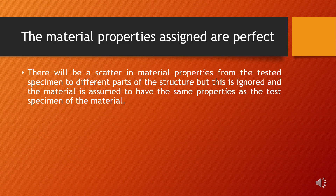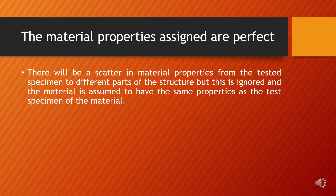The last assumption is that the material properties we have assigned are perfect. If you test material properties from specimen to specimen, they will vary, and from structure to structure they will also vary. But we assume that the structure has exactly the same properties that we have assigned. This will introduce some amount of error; however, the error is likely to be small.